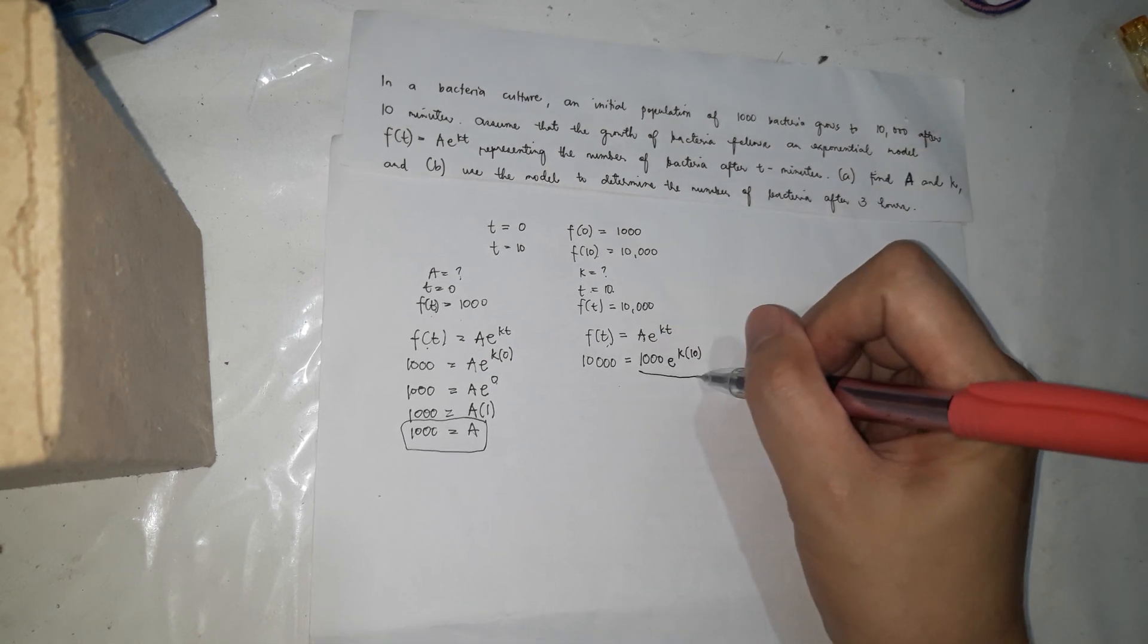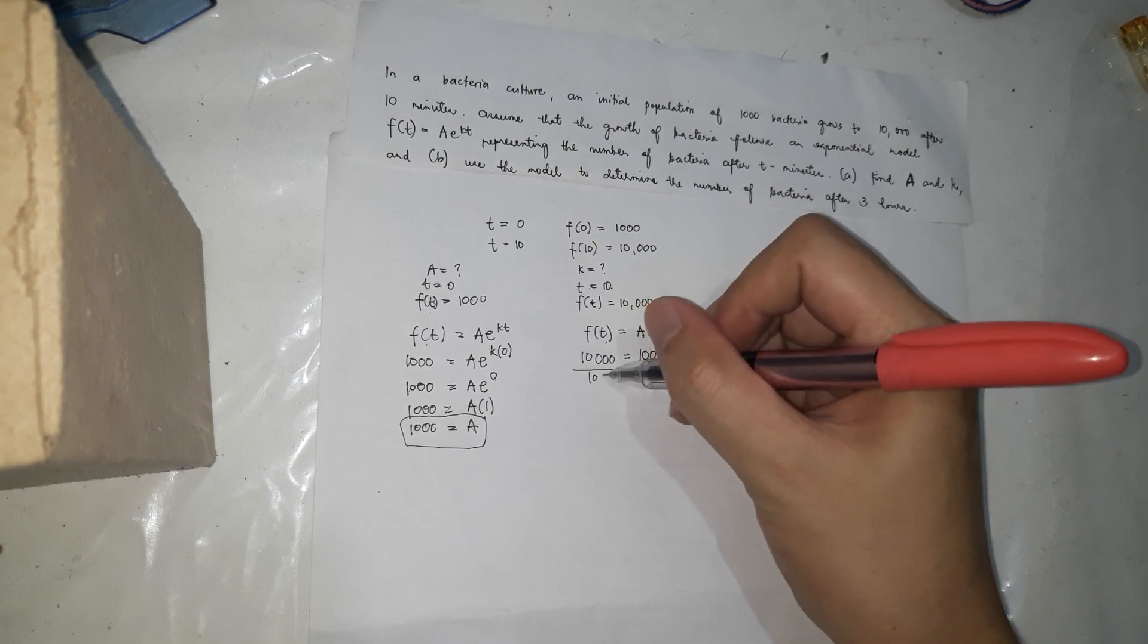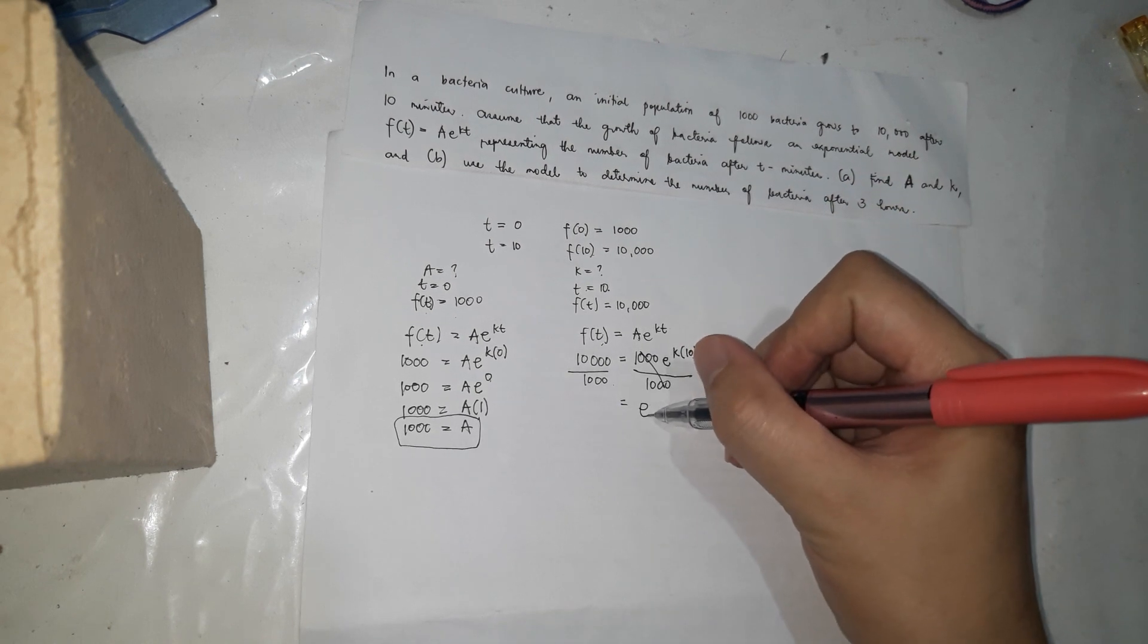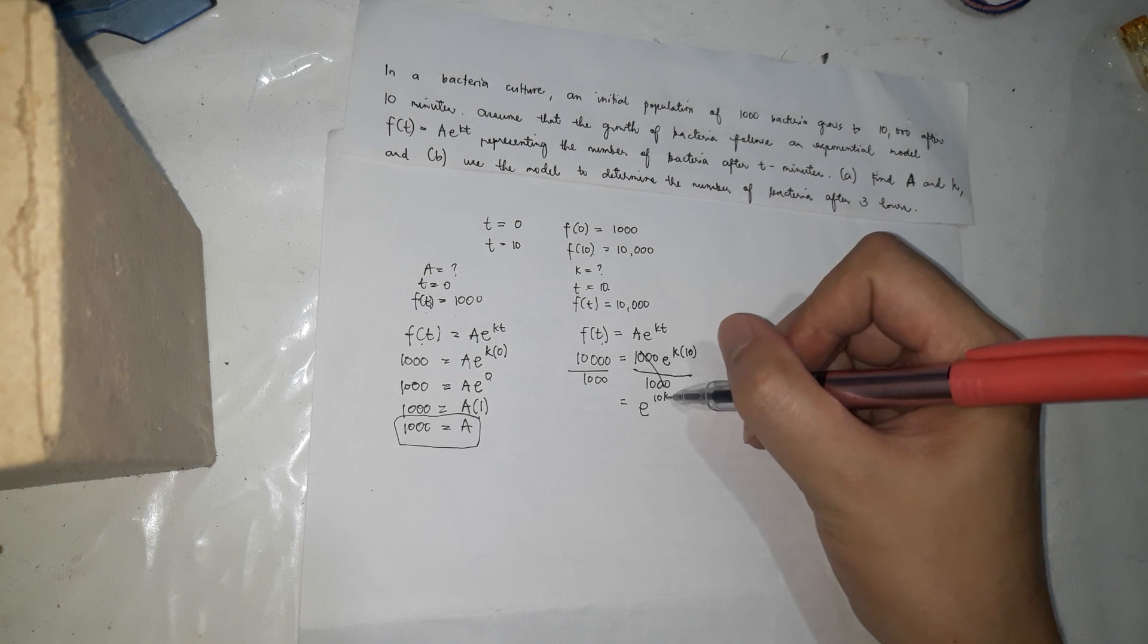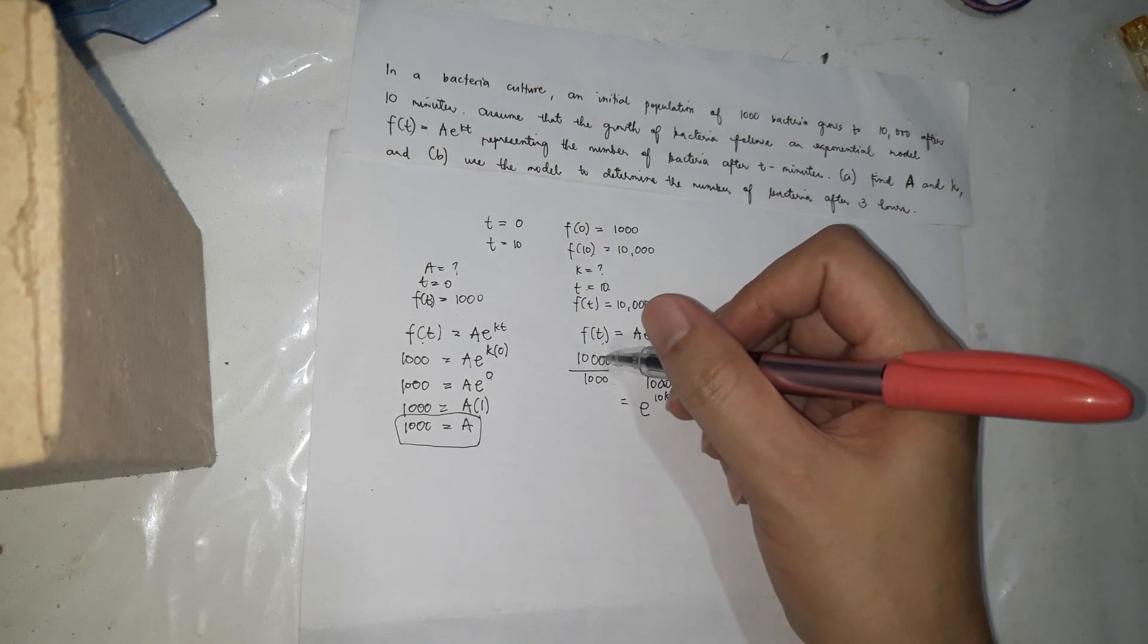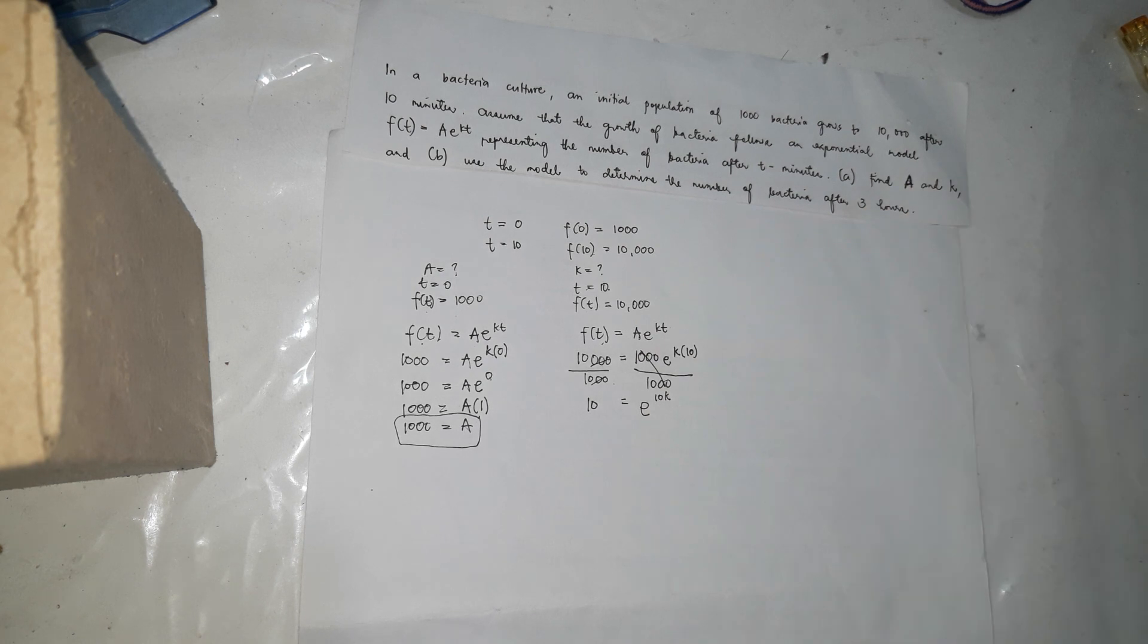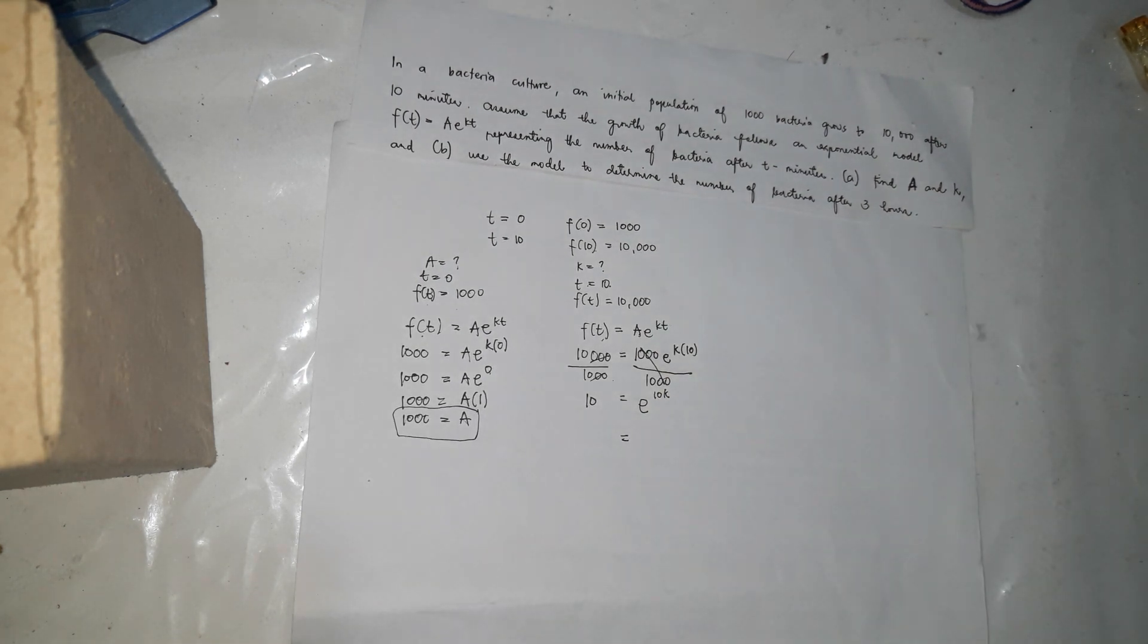Next, divide both sides by 1,000. Why do we need to divide by 1,000 to make it easier? So you can cancel this. What remains is e to the power of k times 10. That's 10k. Divide here. You can erase the three zeros. So three zeros. So 10 divided by 1 is 10. So 10. Next, how do you solve it? To solve that, you'll use log.